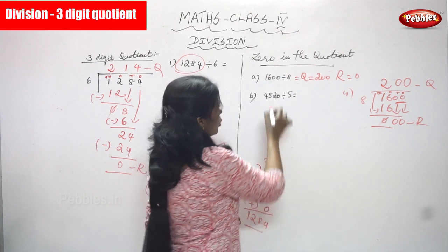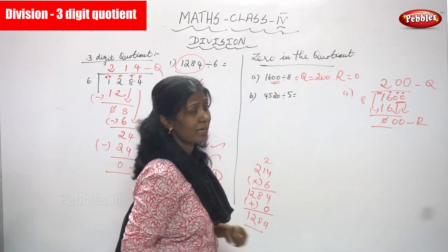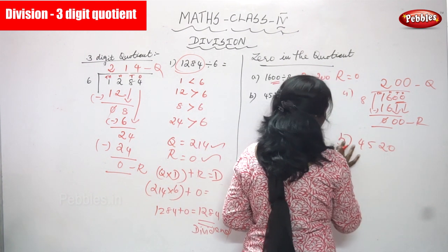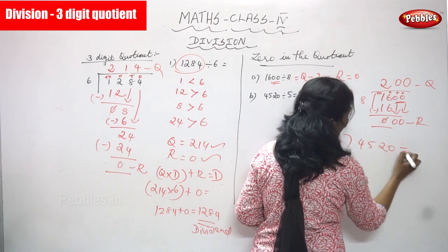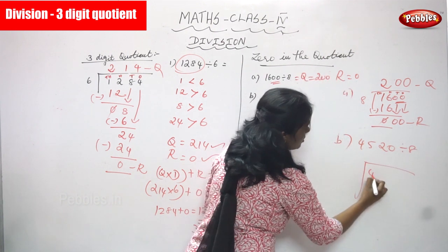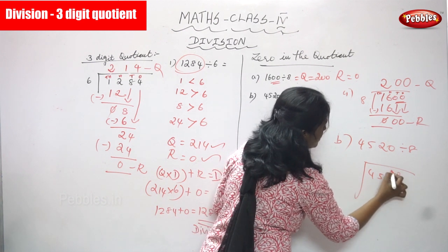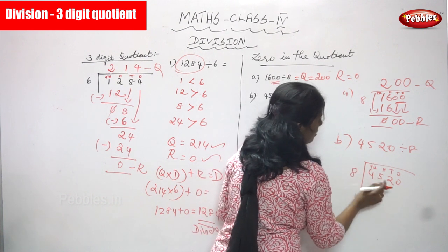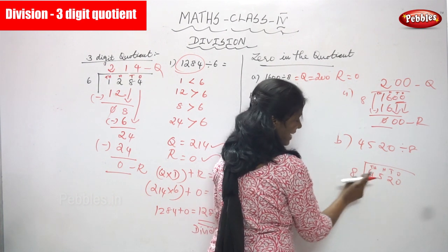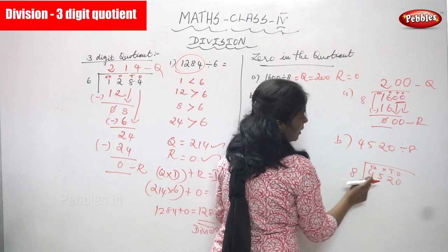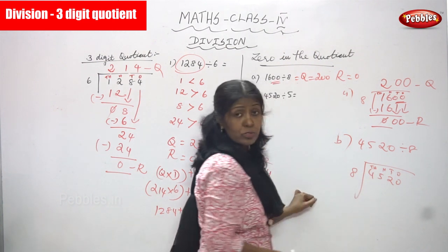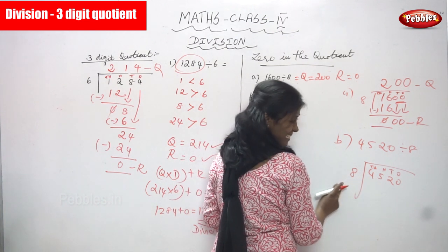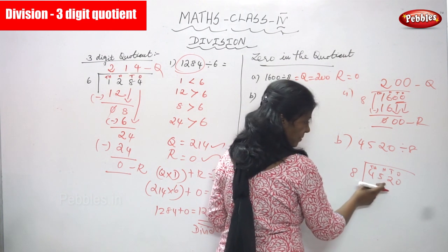Next problem: 4520 divided by 8. This is a four-digit dividend and a single-digit divisor. Write the place values: ones, tens, hundreds, thousands. Start with thousands: compare 4 and 8 — 4 is less than 8, so you can't divide. Go to the hundreds place.